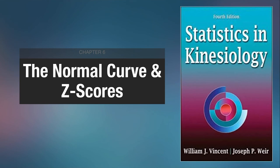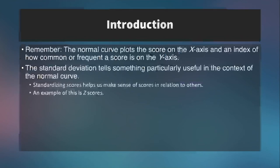We'll be talking about z-scores today as well as some other standard scores. Z-scores are great for converting scores using different units into a standardized score with a known mean and standard deviation, so that we can compare those scores to each other. Let's learn how to do it. Here we are in the slides, and this comes from Statistics in Kinesiology by Vincent and Ware.